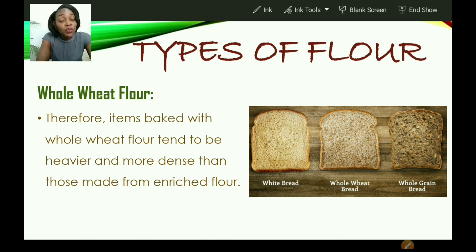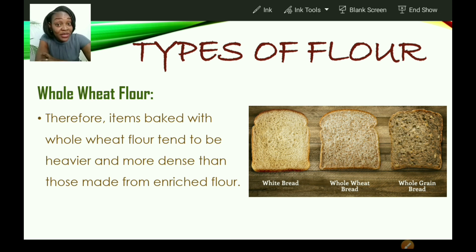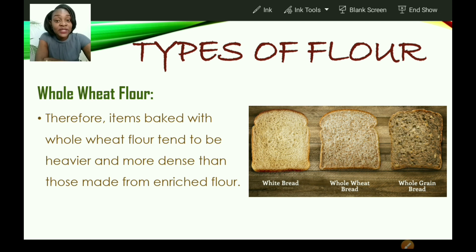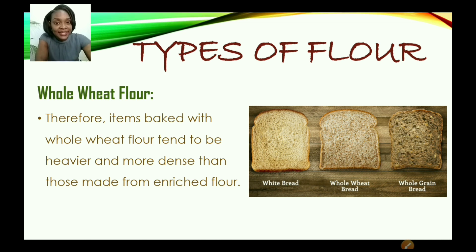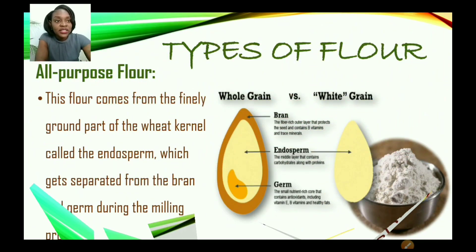The more gluten in the flour, the more dense the product will be. For example, have you ever used wheat flour to make dumplings? There is a difference in texture between a fried dumpling made with wheat flour and one made with white flour. The gluten found in flour is the protein content, and baked products made from whole wheat flour, which has a lot of gluten, are more dense.